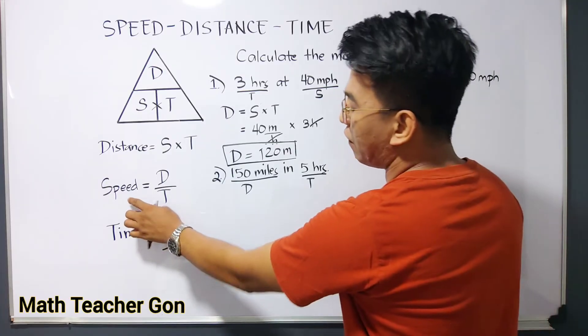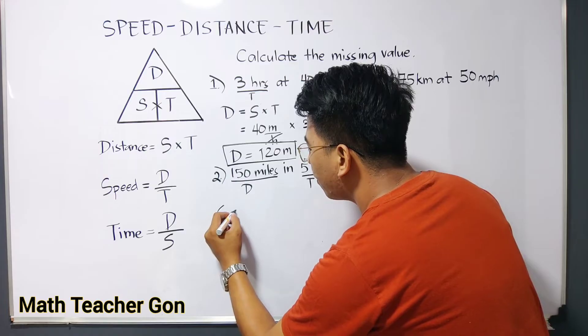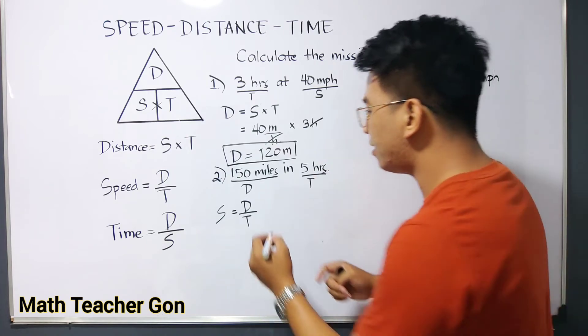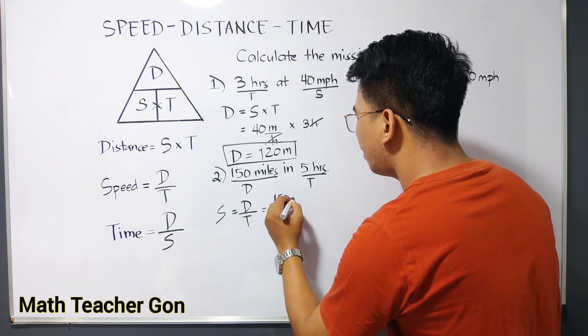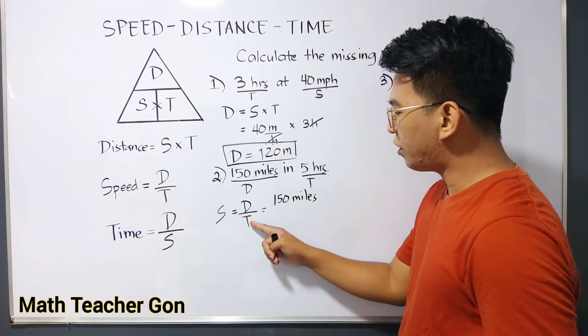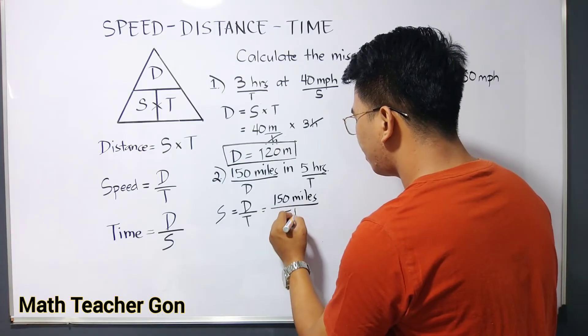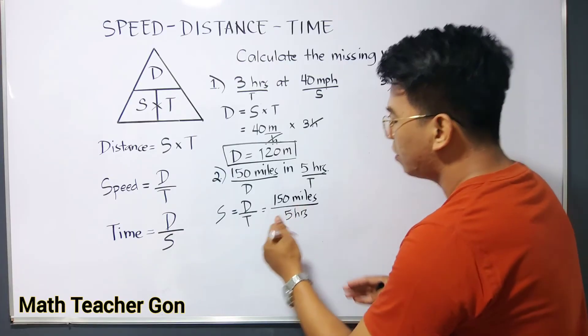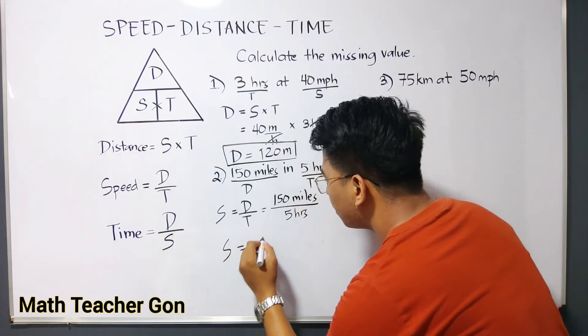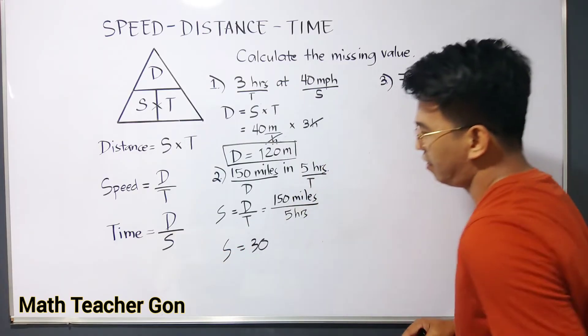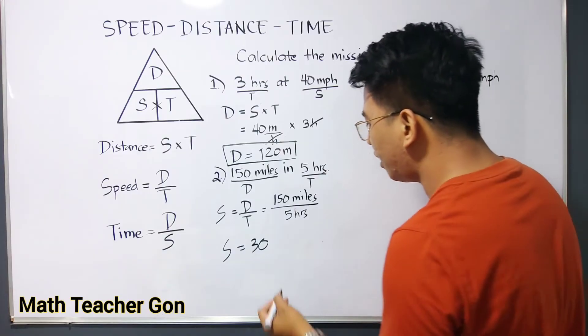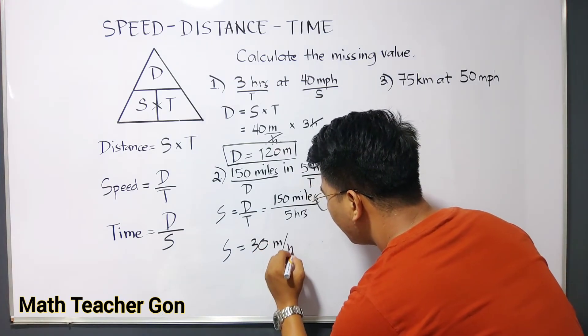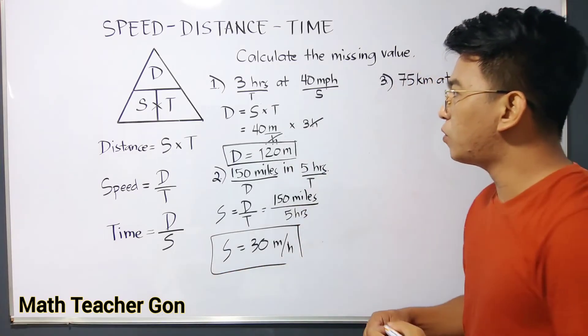Therefore, you will be using this formula: speed or S is equal to D over T. Substituting the value of your distance, which is 150 miles, over your time, which is 5 hours. So you can simplify this. You have 150 divided by 5. So our speed now is equal to 30. 150 divided by 5, which is 30. And then, this is miles per hour. This is our speed for item number two.